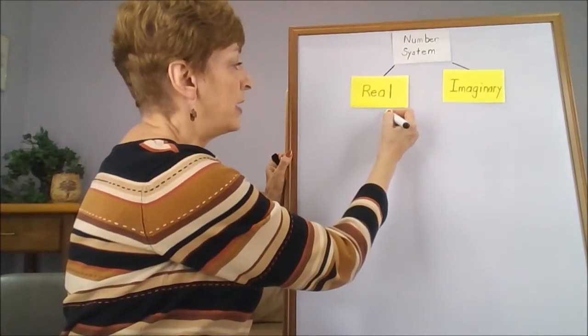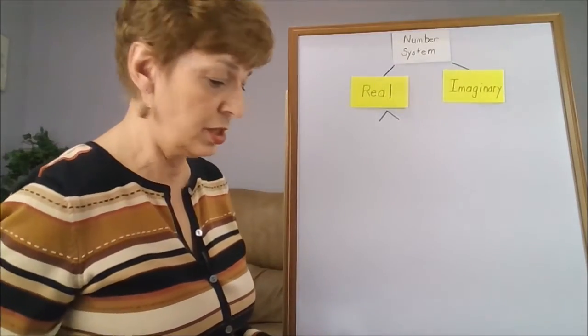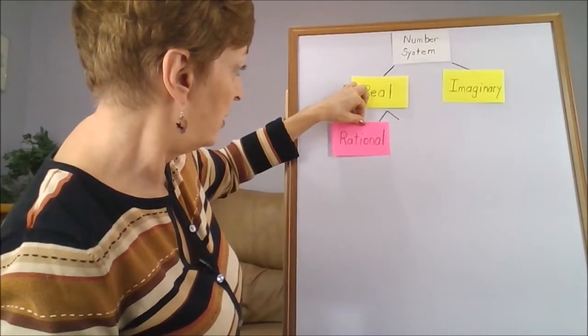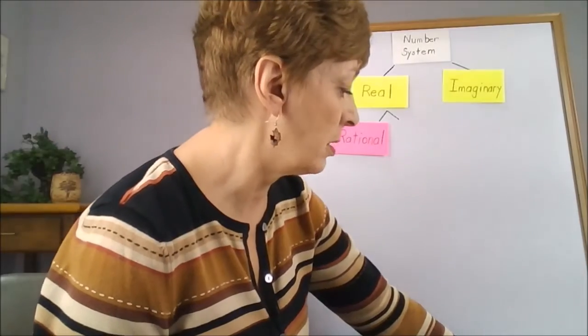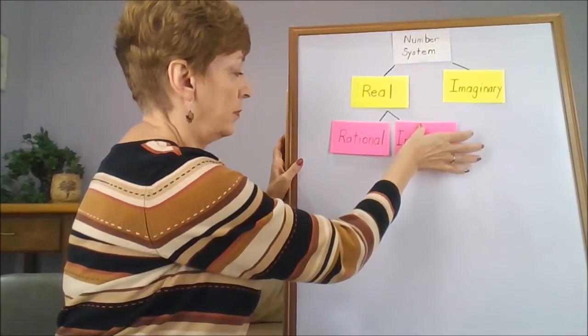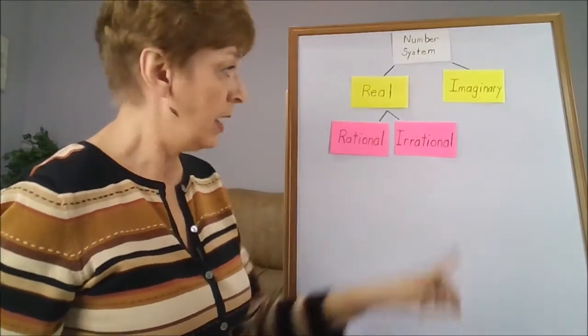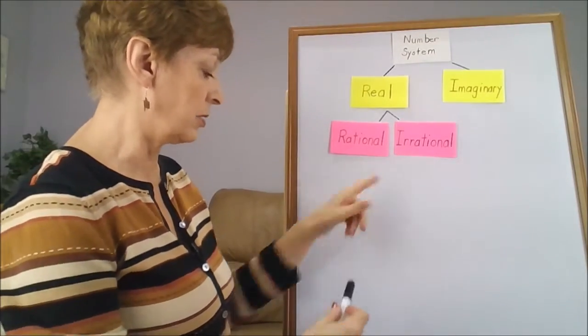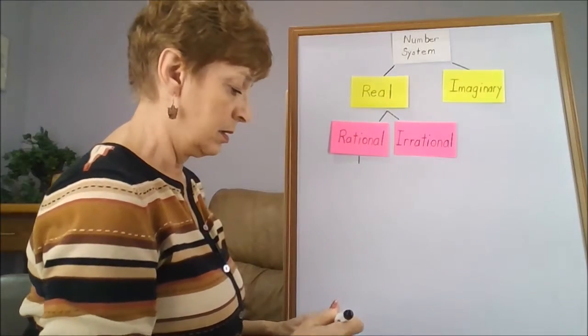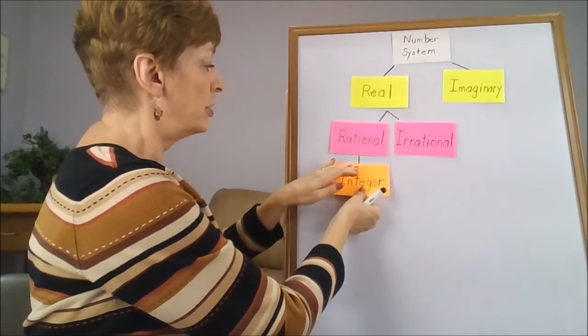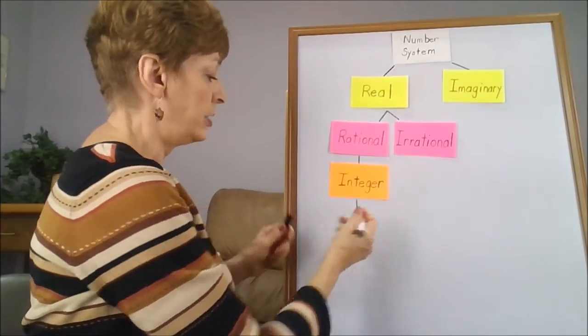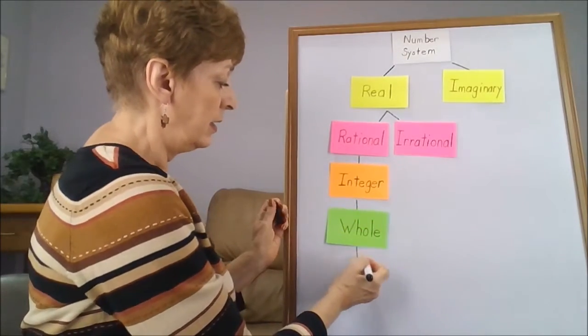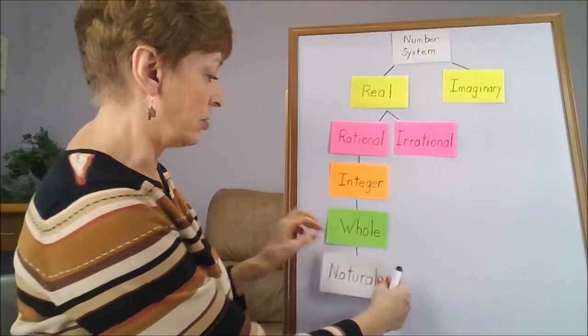The real numbers then branch out into two positions too. Our next size cup would be rational numbers and irrational numbers. The irrational number then trails, but the rational numbers continue on into what's called integers. The integers branch into whole numbers, and finally the whole numbers branch into the natural numbers.